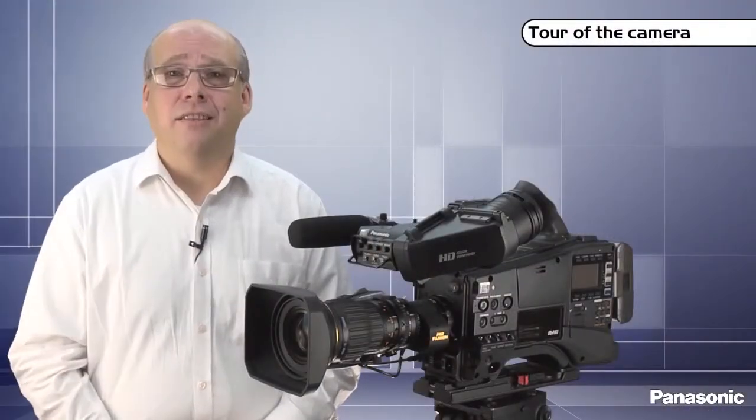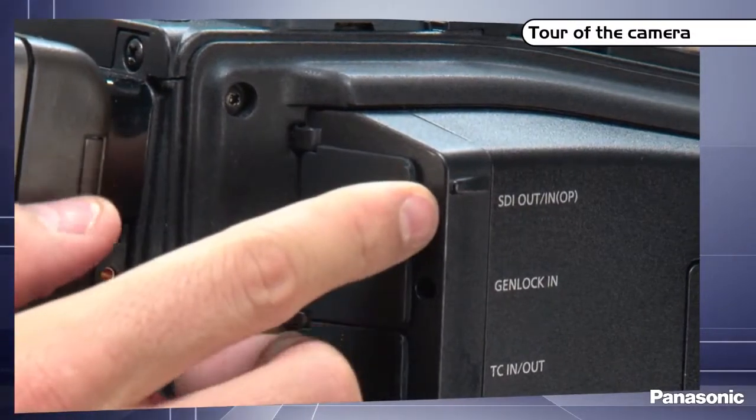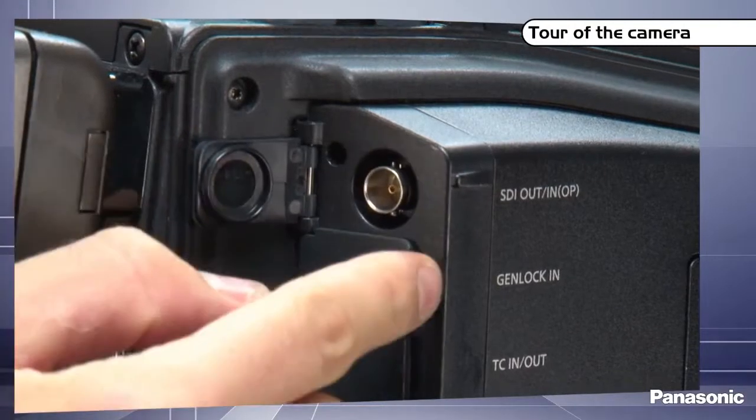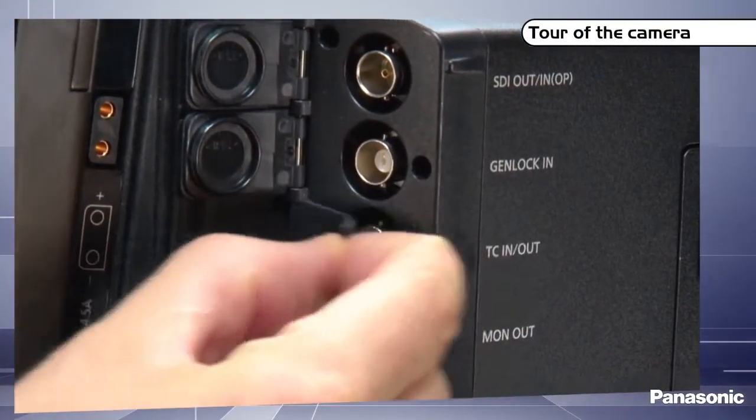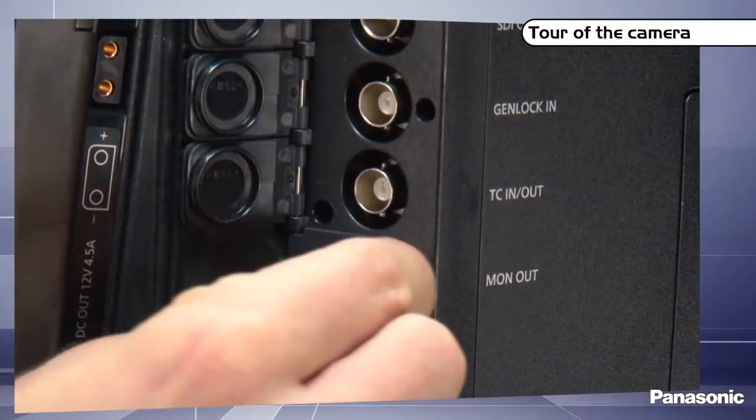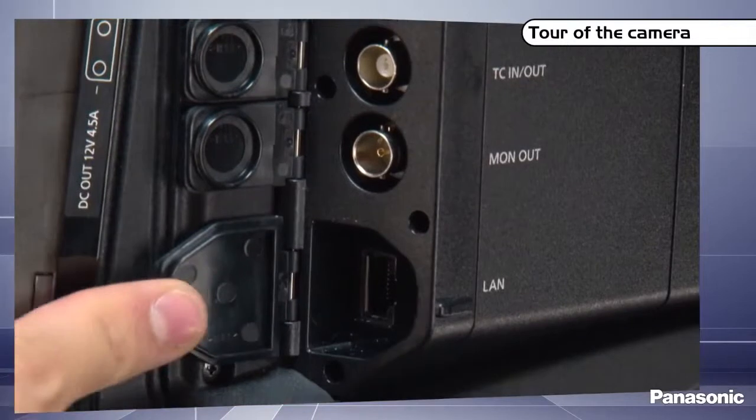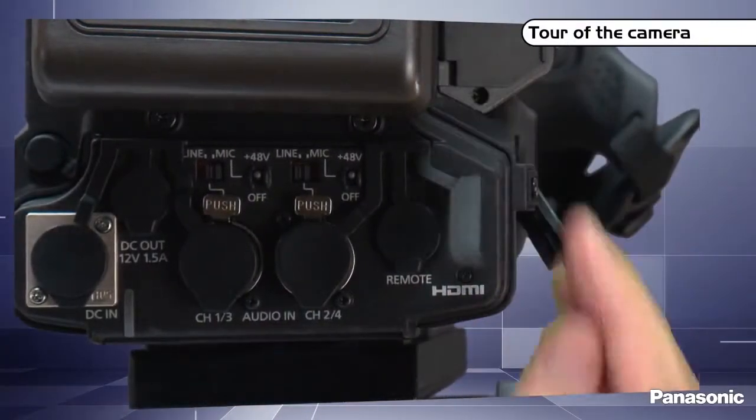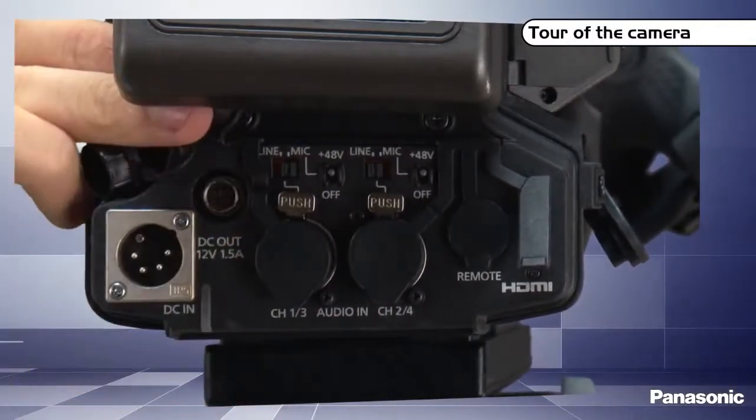Let's take a look at the connectors. There's one SD HD SDI output, an optional SD or HD SDI input, one GenLock input, timecode in and out, SD or HD SDI monitor output or PAL, one RJ45 network connector, one HDMI output, one 4-pin XLR 12-volt power input with an output.